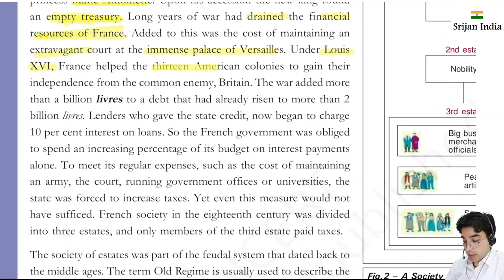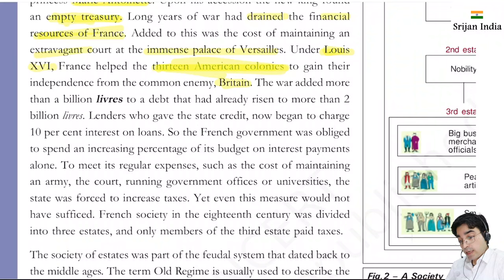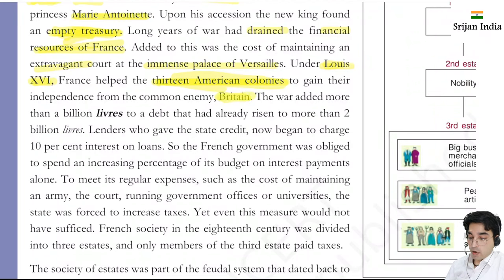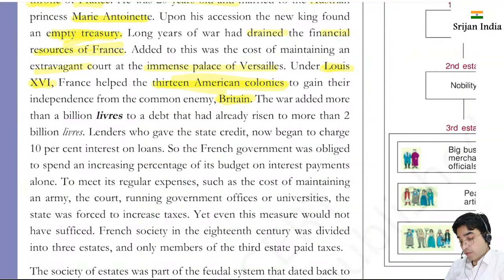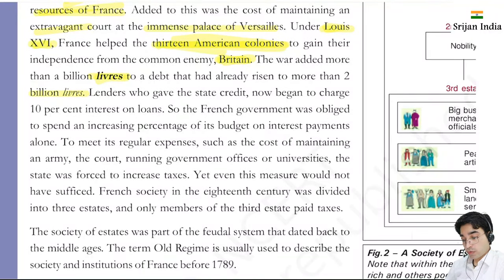These were basically British colonies in the USA. France spent a lot helping them gain freedom from Britain, which emptied France's treasury. The war added more than a billion livres to a debt that had already risen to more than two billion. Lenders who gave the state credit now began to charge 10 percent interest on loans. So the French government was obliged to spend an increasing percentage of its budget on interest payments.